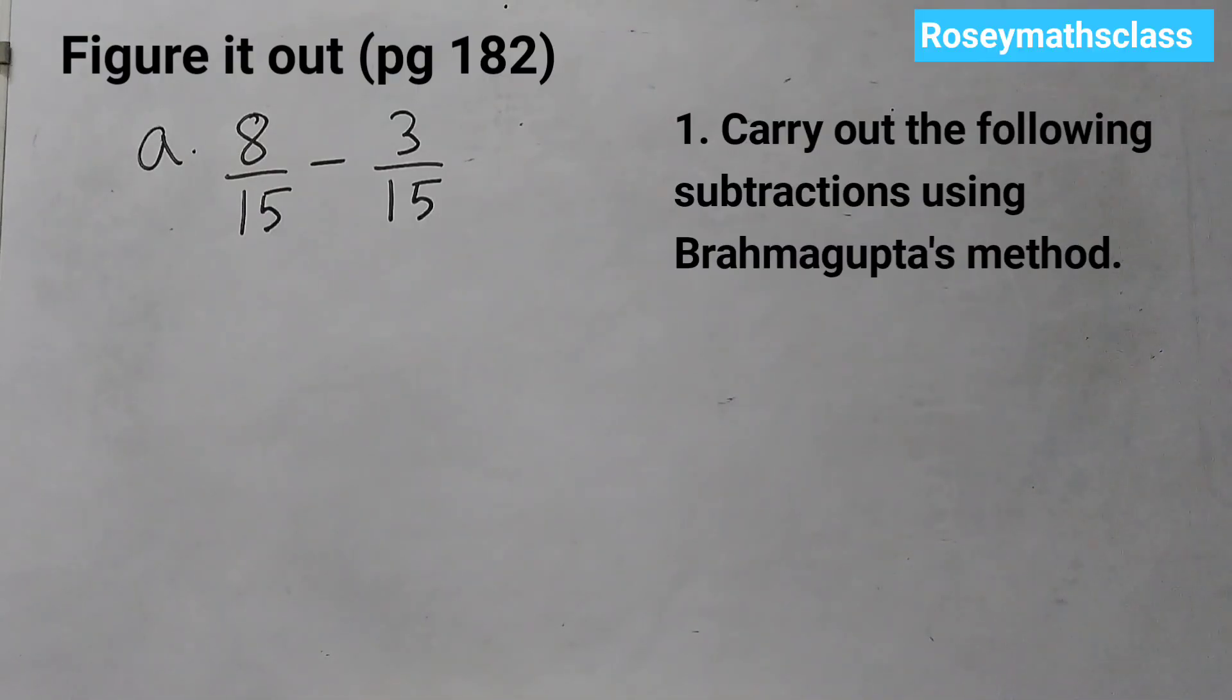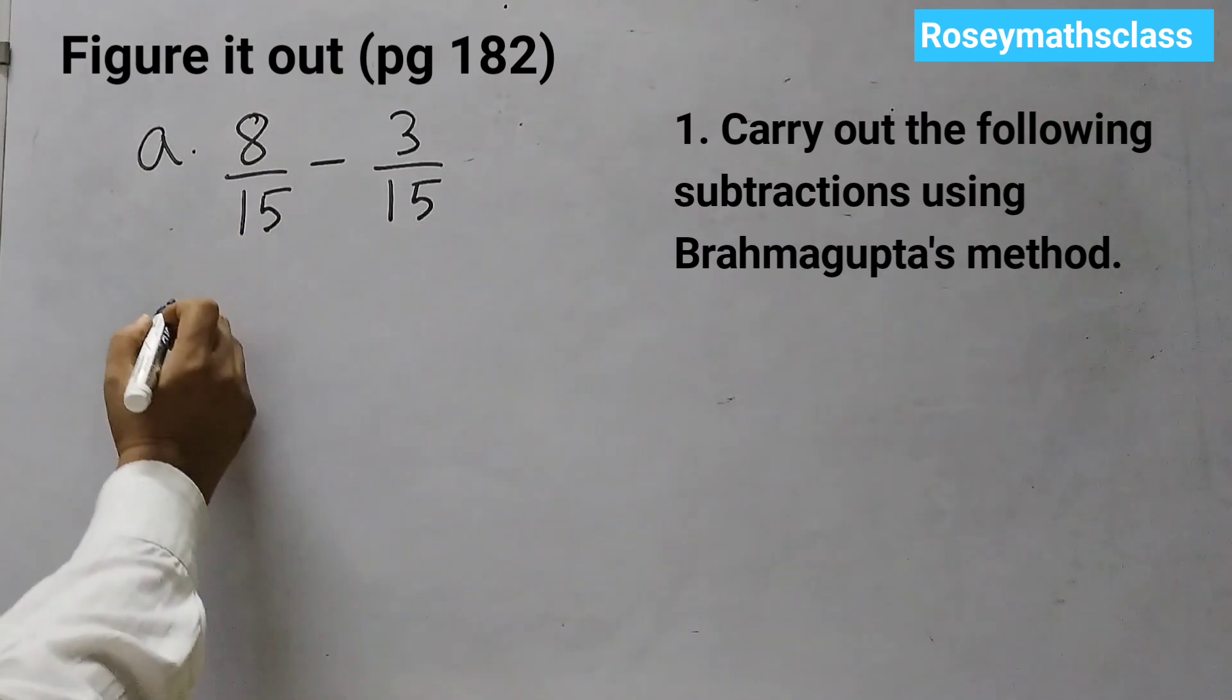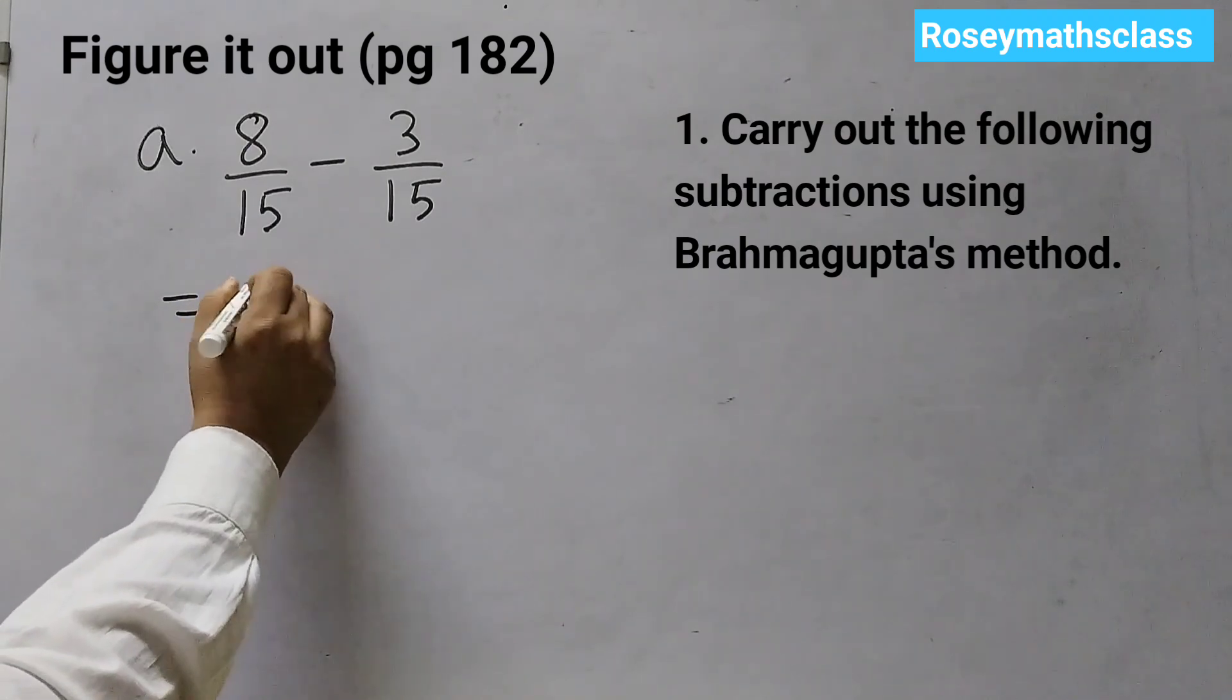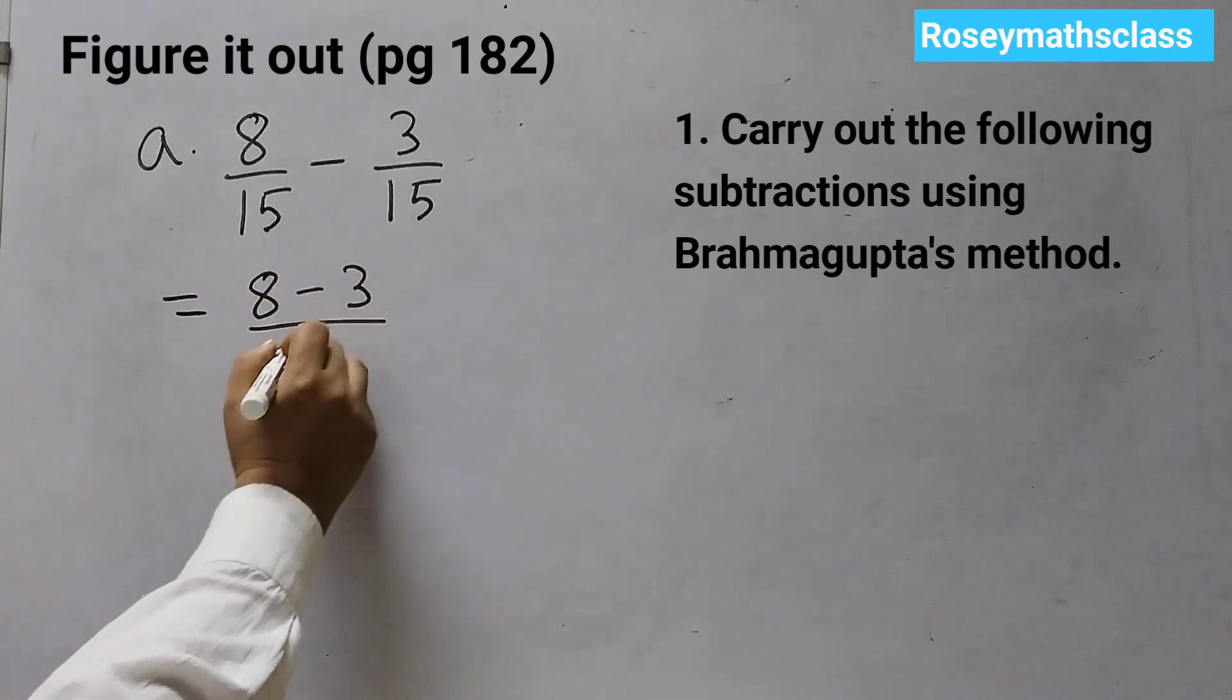Carry out the following subtractions using Brahmagupta's method. So we are going to subtract using Brahmagupta's method. First one is 8 upon 15 minus 3 upon 15. Same denominator, so it's very easy. You just need to subtract the numerators. 8 minus 3 upon 15.